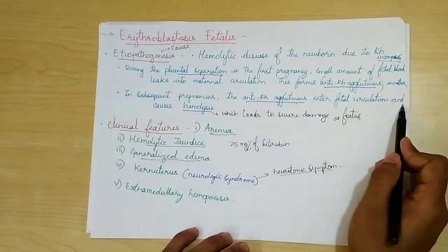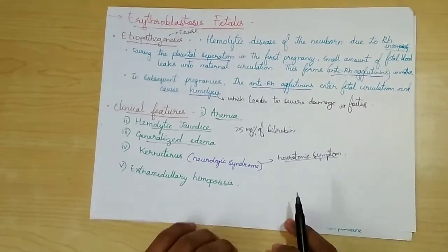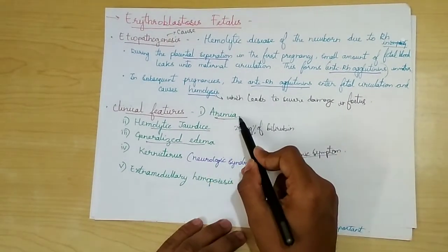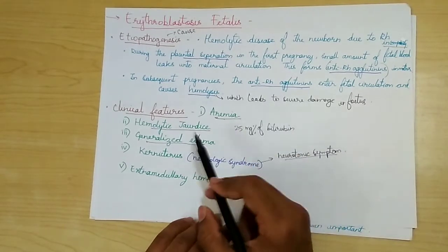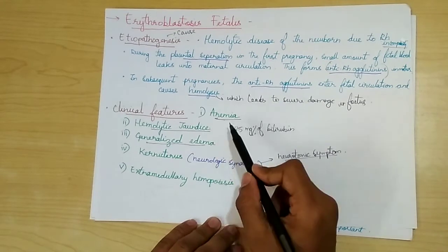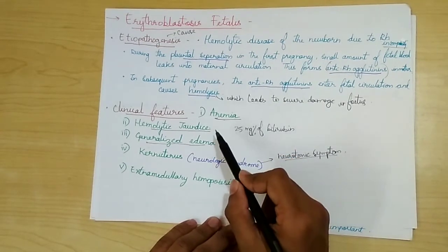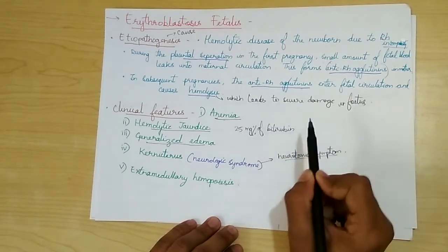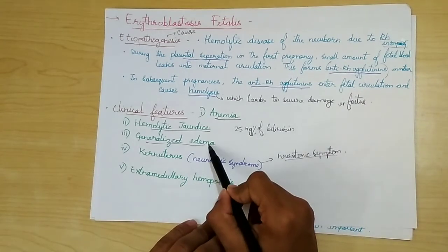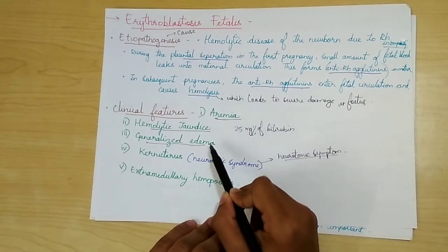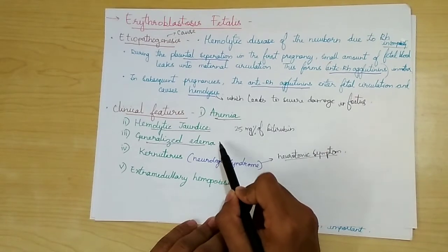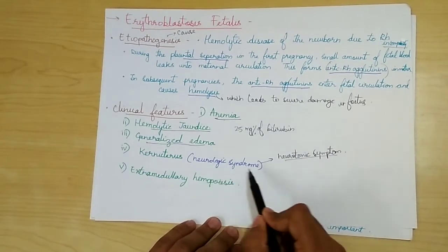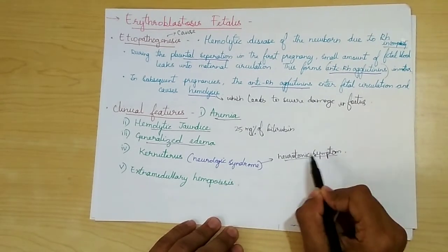In subsequent pregnancies, the anti-RH agglutinins enter the fetal circulation and cause hemolysis. The clinical features include: anemia, caused by severe hemolysis in the fetus; hemolytic jaundice, also caused by severe hemolysis, leading to elevated bilirubin — up to 25 mg% or more in severe cases; and generalized edema, caused by hemolysis and hypoproteinemia, causing fluid to enter the extracellular space.